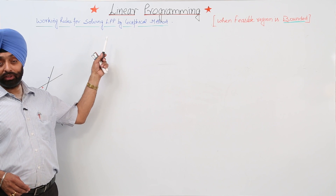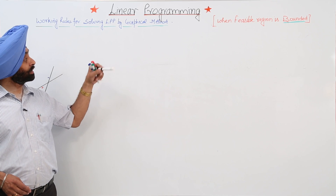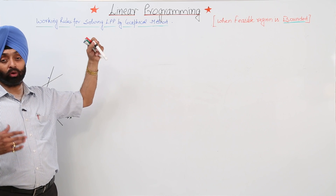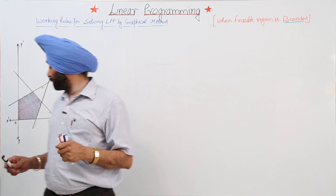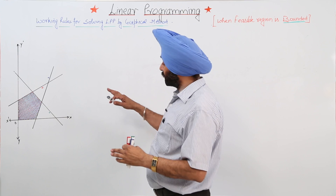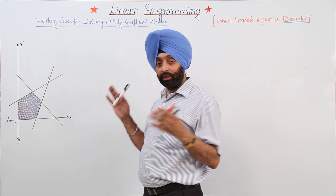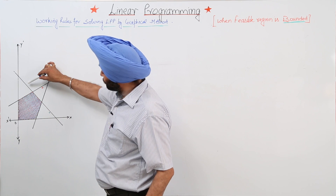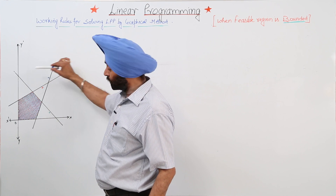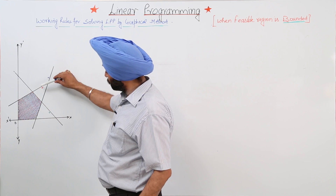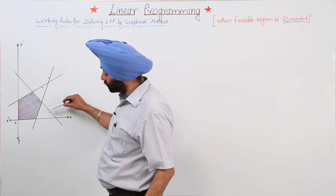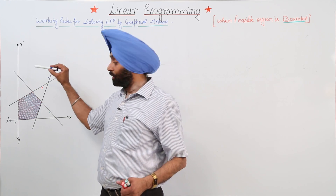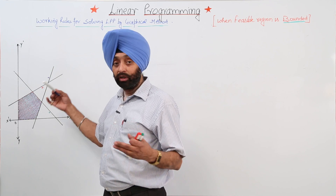Working rule for solving LPP linear programming problems by graphical method when the feasible region is bounded. Bounded means we have drawn a graph with a bounded area. When we have all the shaded parts — for example, three constraints shaded with red, blue, and green lines — the overlapping region becomes a bounded feasible area.